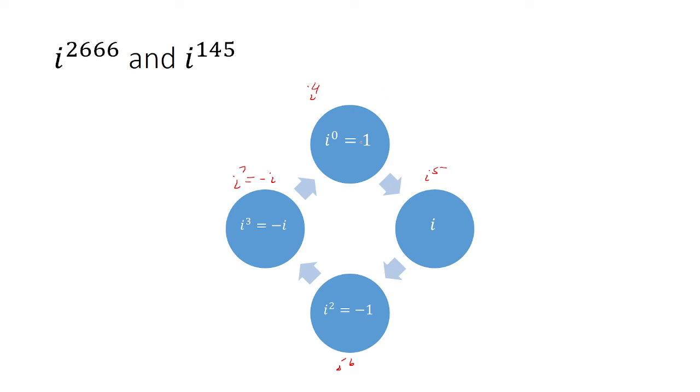So if it's remainder 0, it's going to be 1 here. If the remainder is 1, it's going to be i. If the remainder is 2, it's going to be i squared, which is negative 1. If the remainder is 3, it's going to be i cubed, which is negative i.